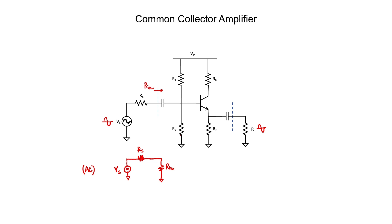If you make R1 and R2 too large, then the input impedance to the base of the transistor itself might start to become non-negligible. I recommend an upper limit of R1 and R2 in the tens of kiloohm range. We have one path going up to an AC ground and one path going down to ground, so the input impedance from the perspective of the AC signal is R1 in parallel with R2.